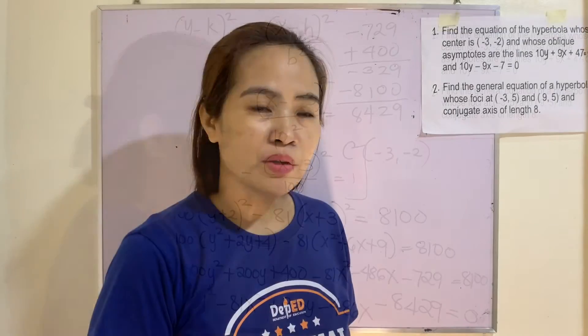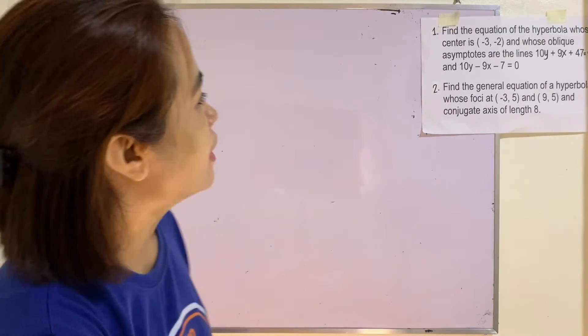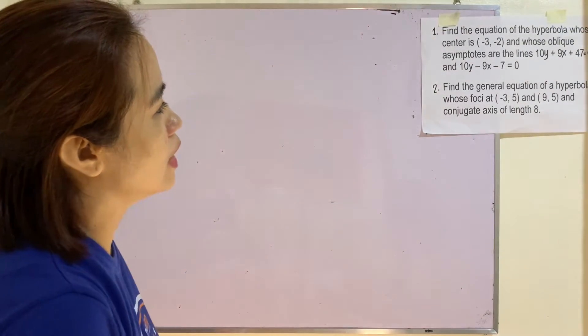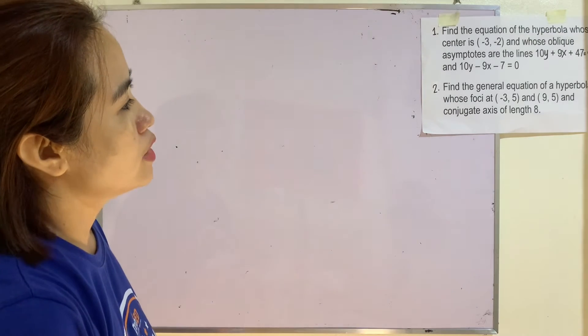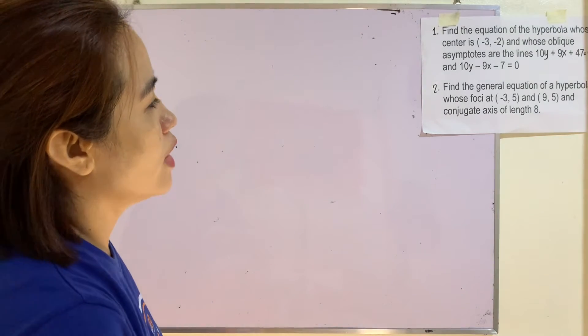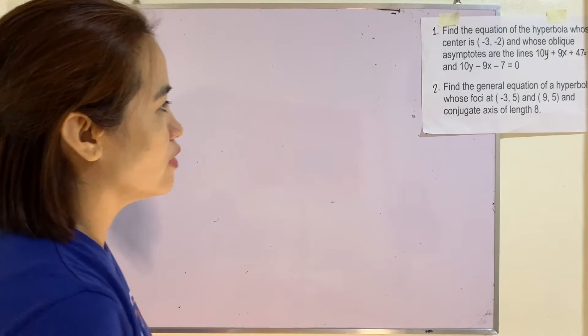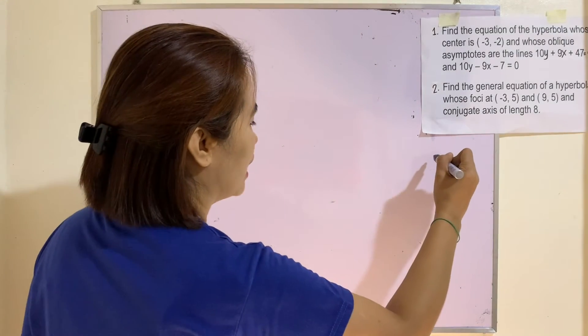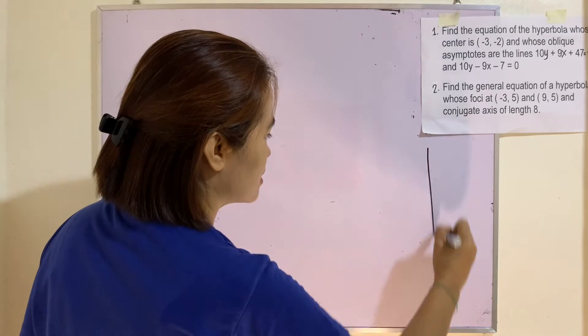Example number 2: Find the general equation of a hyperbola whose foci are at (negative 3, 5) and (9, 5) and conjugate axis of length 8.